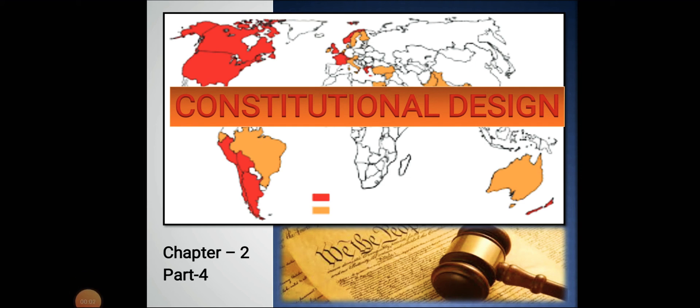Good morning everyone. This is the fourth part of the chapter 'Constitutional Design.' By now we have understood about the making of the Indian Constitution, about the constituent assembly — the group of people who made the Constitution of India. Now we are learning about the philosophy, the guiding values of this Indian Constitution. We know that by two methods we can understand our Constitution: firstly, what the leaders want to say about it, what promises they made, and what vision they had to make our Constitution better and stronger.